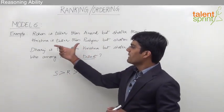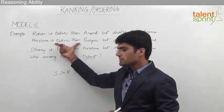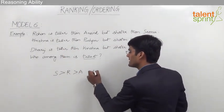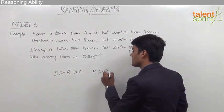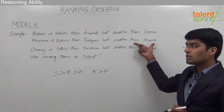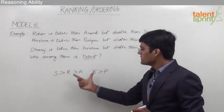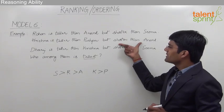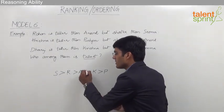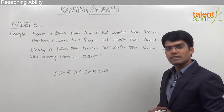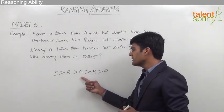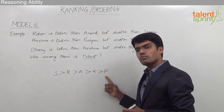The second statement says Krishna is taller than Pushpa, but we have neither Krishna nor Pushpa in our equation yet. Krishna is shorter than Anand, meaning Anand is taller than Krishna. Integrating this, the combined statement becomes: Sima is taller than Rohan, Rohan is taller than Anand, Anand is taller than Krishna, and Krishna is taller than Pushpa.